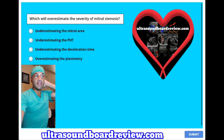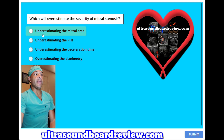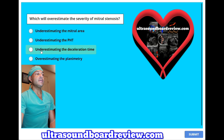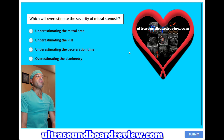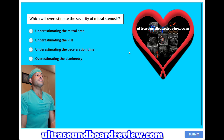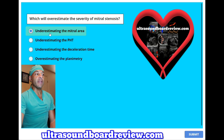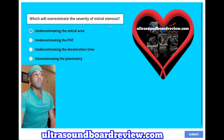Which will overestimate the severity of mitral stenosis? A. Underestimating the mitral area. B. Underestimating the pressure half-time. C. Underestimating the deceleration time. Or D. Overestimating the planimetry. The answer is A — underestimating the mitral area. This means that you're estimating the mitral valve area to be too small, which would make the mitral stenosis appear more severe, overestimating it.